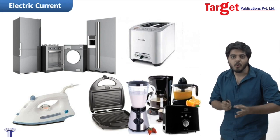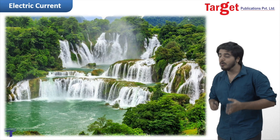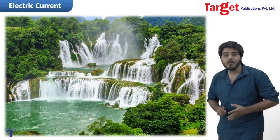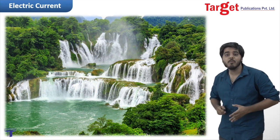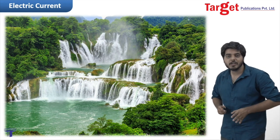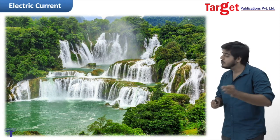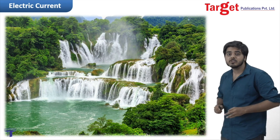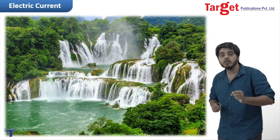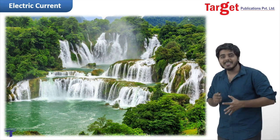The second thing which comes to mind is that electric current is a flow. Let us take the example of a waterfall — here, water is flowing from one point to another point. This is called water current. But we have to learn about electric current, so let us understand it in a more scientific manner.